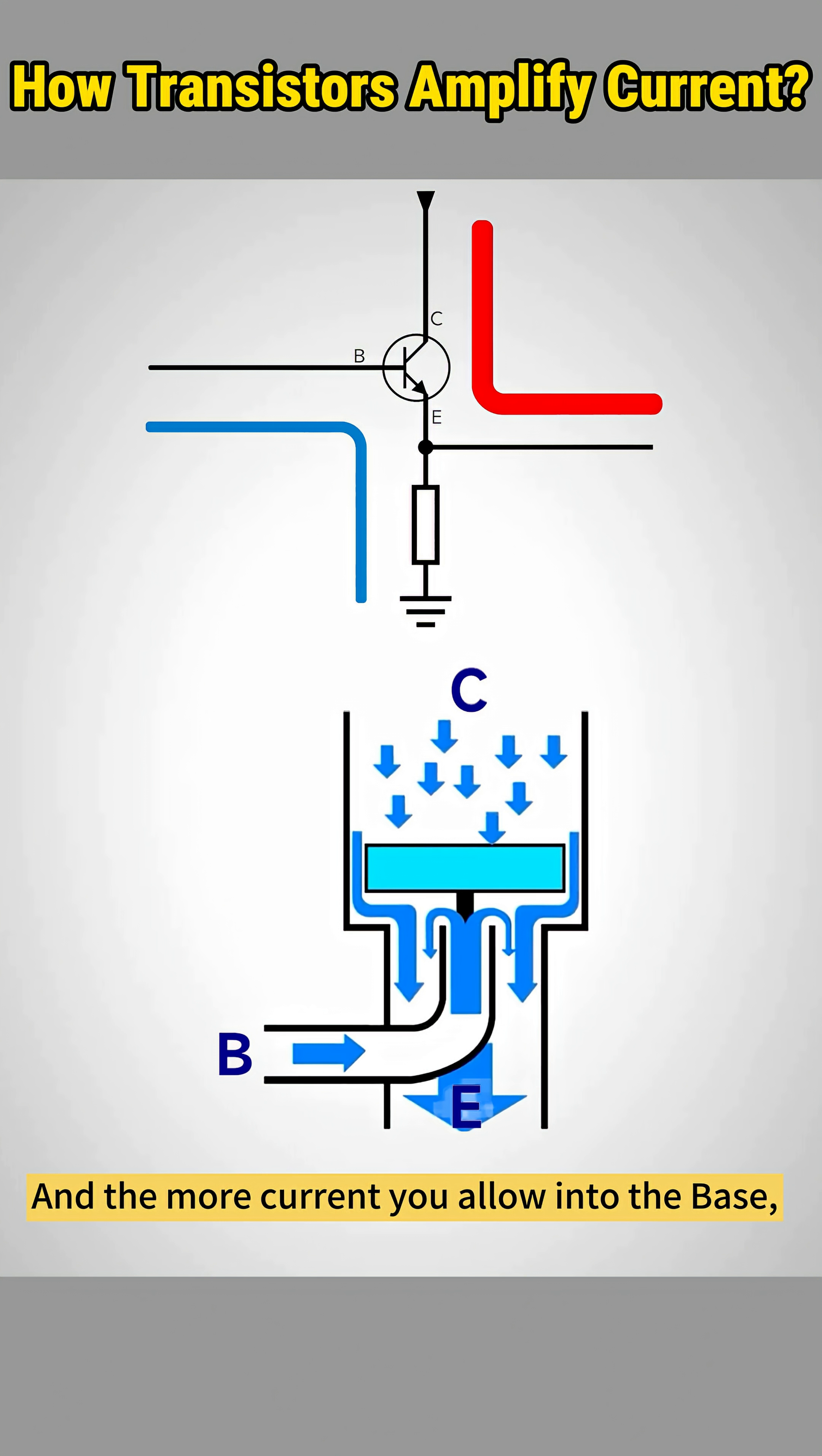And the more current you allow into the base, the more open the path becomes, allowing a greater flow from C to E. That's how a transistor amplifies. A small input controls a much bigger output.